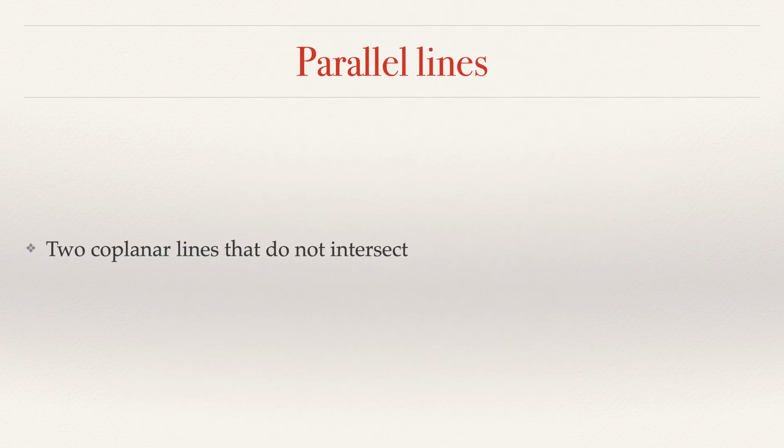Alright, parallel lines are two coplanar lines that do not intersect. In other words, they are going the same direction but they're never touching. Parallel is the type that you tend to think of more.